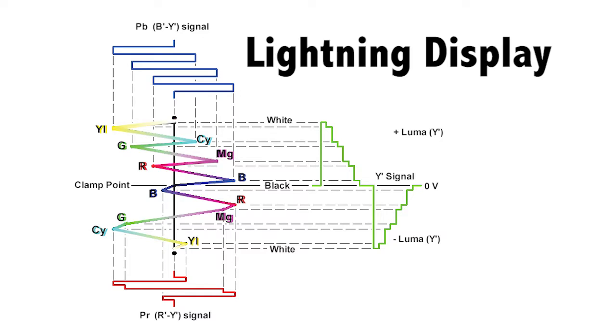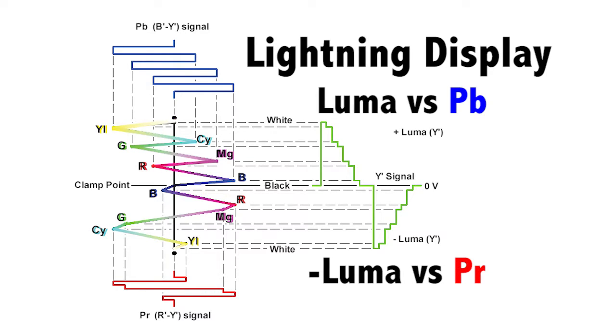The lightning display is constructed as an XY plot of Luma versus PB in the upper half of the display, and negative Luma versus PR in the lower part of the display.